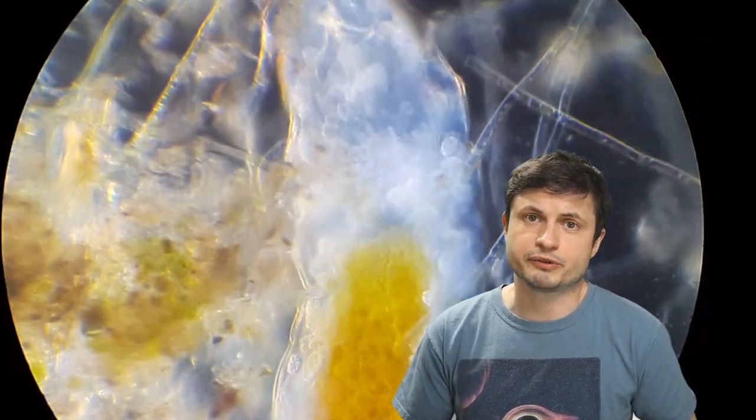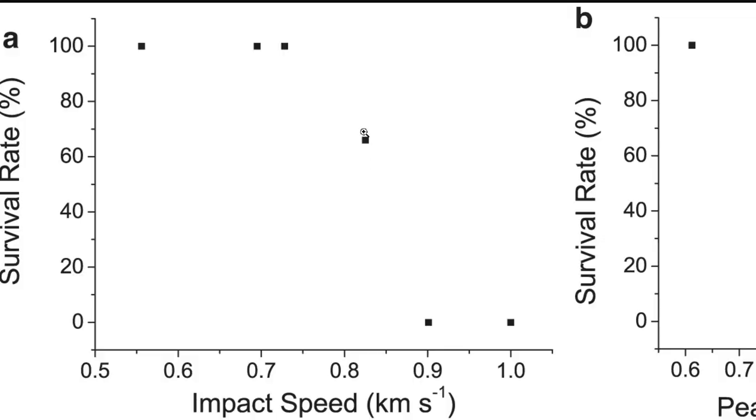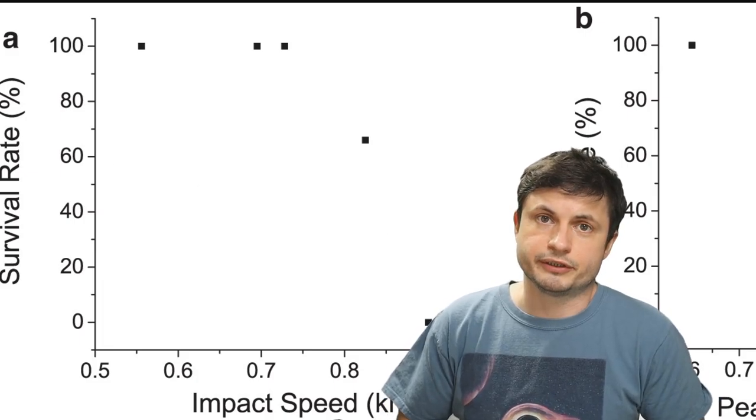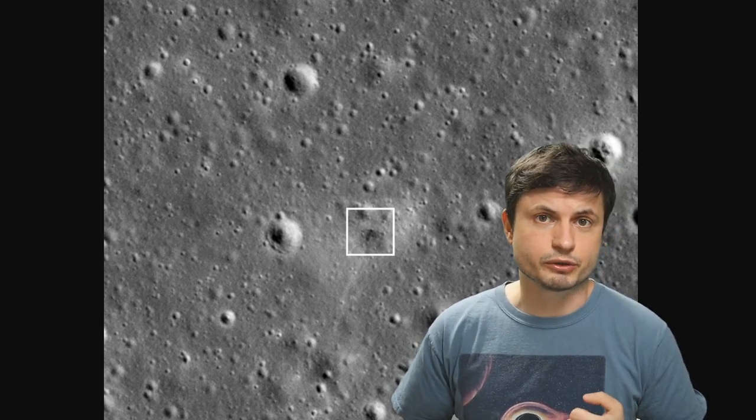The survival rate up to about 800 meters per second was about just over 50 to 60 percent, whereas once the pellet was moving much faster, no tardigrade was alive after this. And these conclusions could actually provide enough information to answer some of these questions I tried to ask previously.